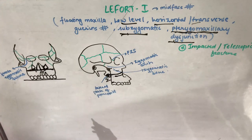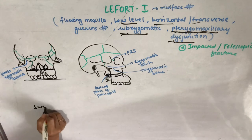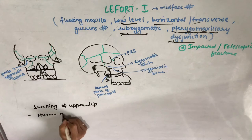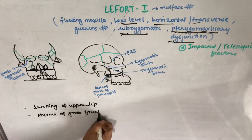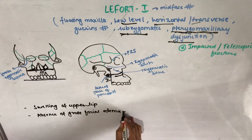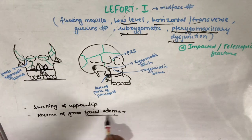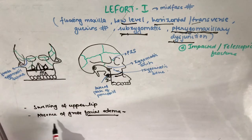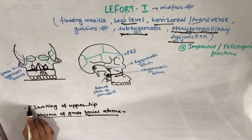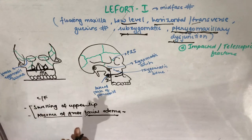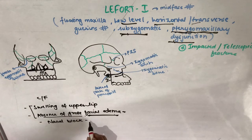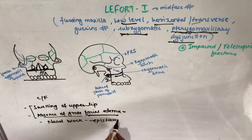Moving to clinical features of Le Fort 1: there is swelling of the upper lip. There is also absence of gross facial edema — this distinguishes Le Fort 1 from Le Fort 2 and 3, where the orbit is involved causing gross edema. In Le Fort 1 there is no orbital involvement. Another feature is nasal block due to a mucosal tear in the maxillary or ethmoidal sinus, inducing bleeding known as epistaxis.